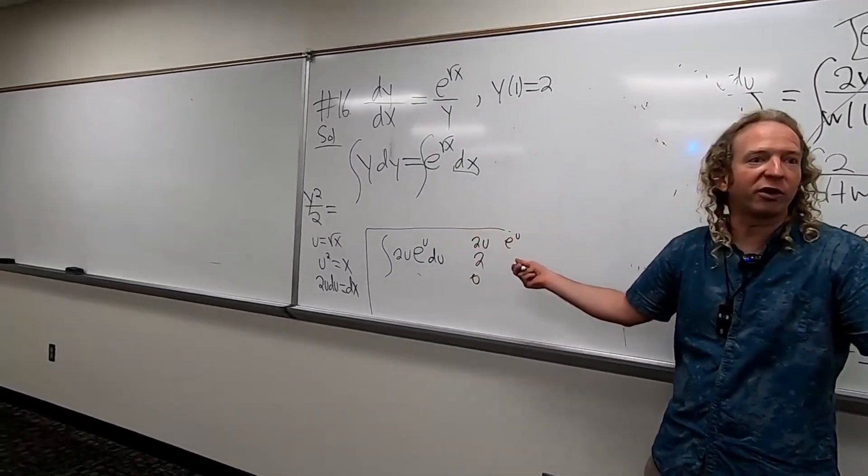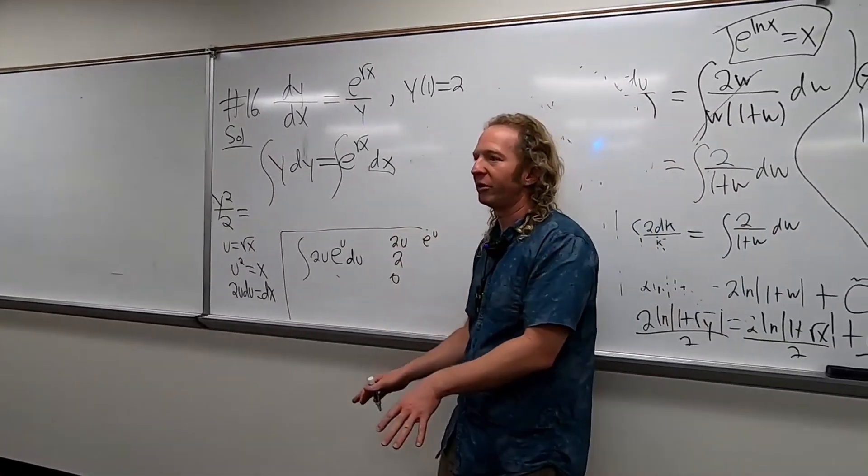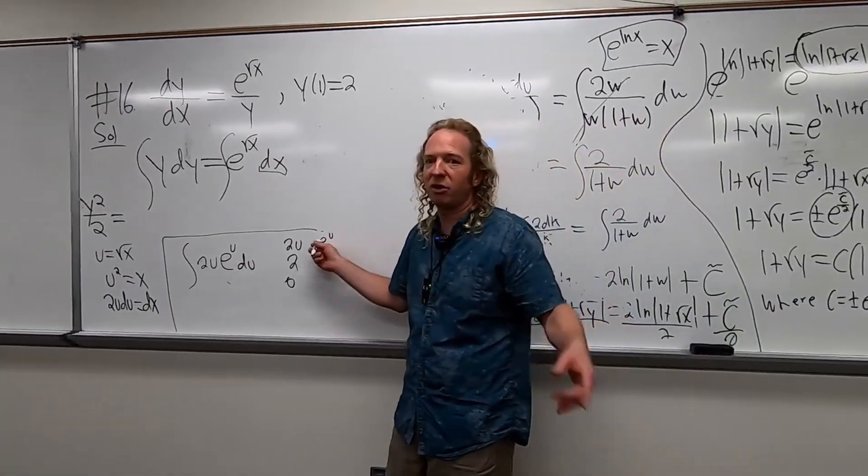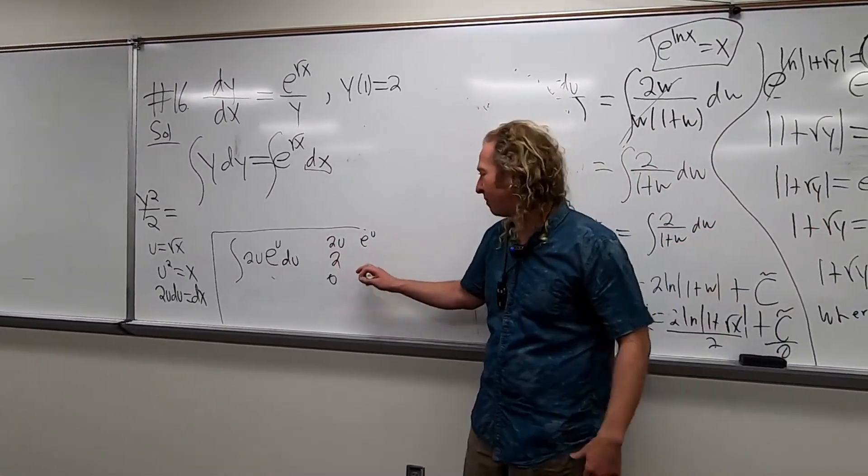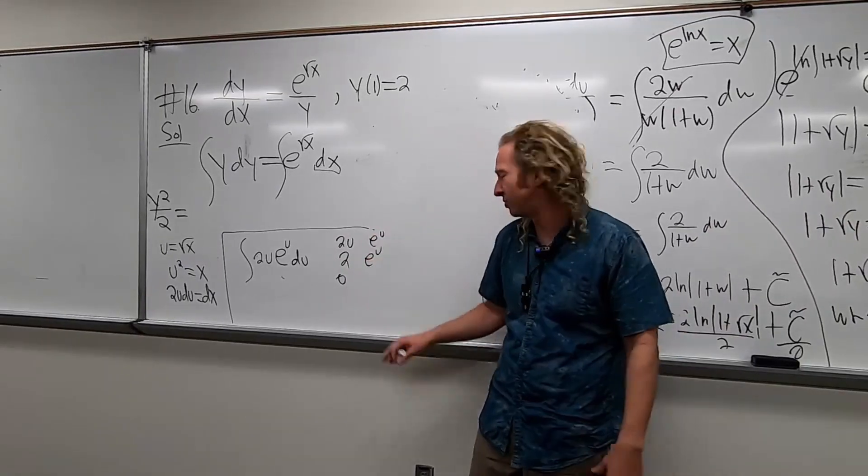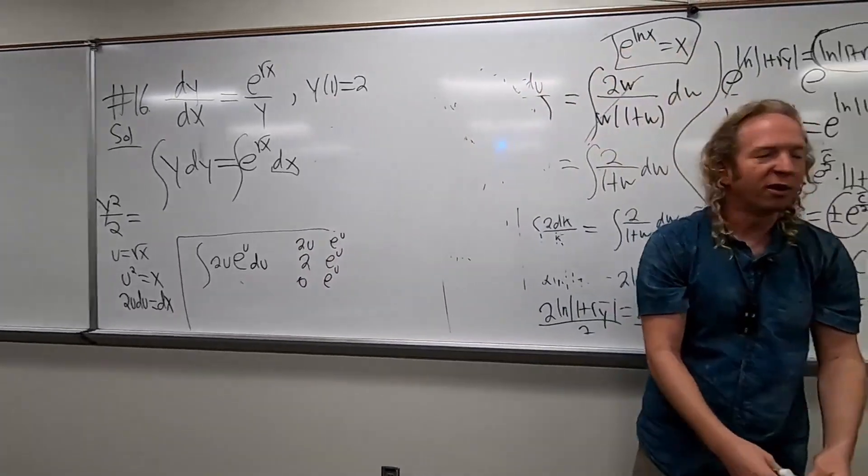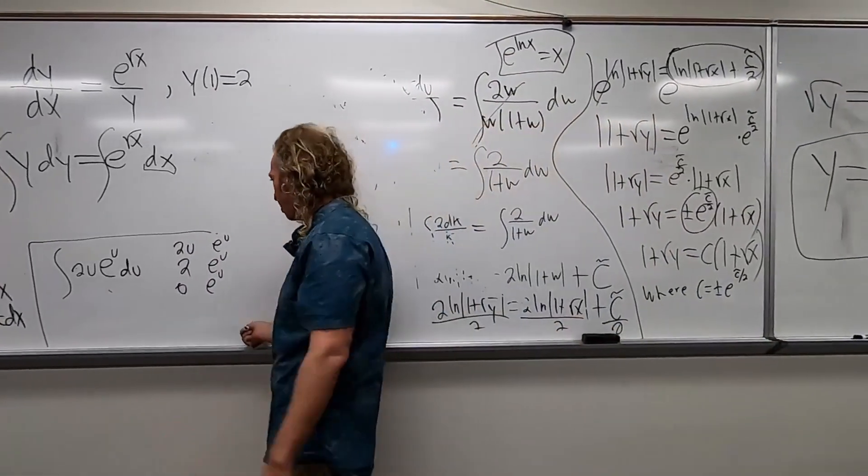Then you just start taking derivatives. The derivative of 2u? Two. And what's the derivative of two? Zero, so then you stop. And then you just keep integrating e to the u, which is really easy, because you just get e to the u. So you pick the piece to differentiate, and you go straight down. And then you pick the piece to integrate, and you go straight down.